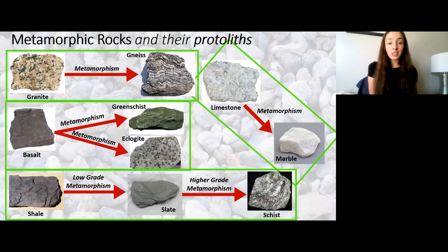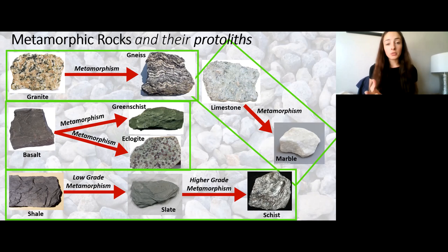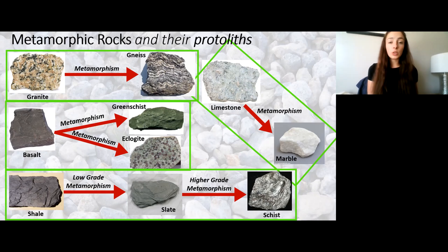In our classification of metamorphic rocks we're going to discuss protoliths, which is basically the rock that came before the metamorphic rock — the parent rock or original rock to its metamorphic product. For example, granite, which we know is an igneous rock, metamorphoses to form gneiss, and you can see in the gneiss these lines, and that's what I meant by foliation, which is caused by really extreme pressures.